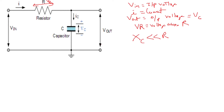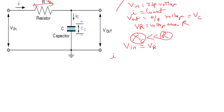If the reactance of the capacitance is very much less than resistance R, then whatever input voltage we apply will be approximately equal to the voltage across the resistor. So Vin ≈ Vr. Therefore, current I equals Vin divided by R, which is also Vr divided by R.